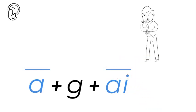The way to write a long A is A-I. That's sometimes the way. You can hear the first vowel. First vowel does the talking, second one keeps on walking. You can only hear the A.